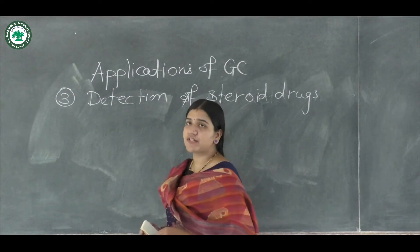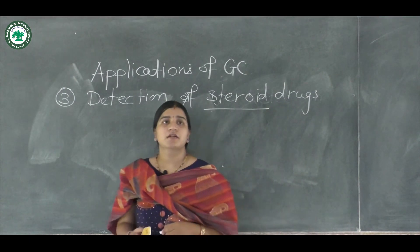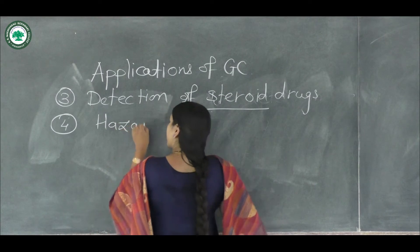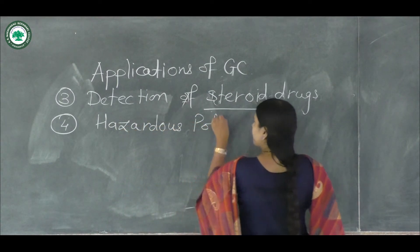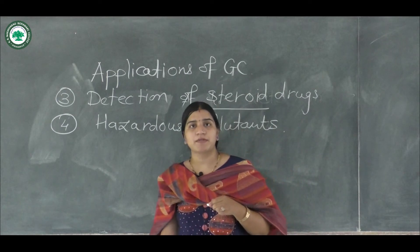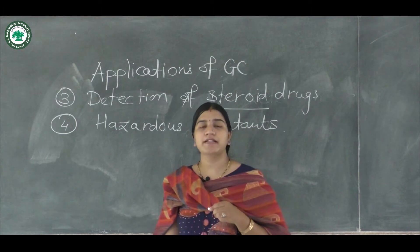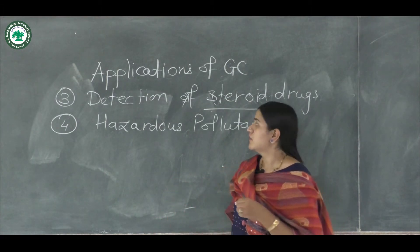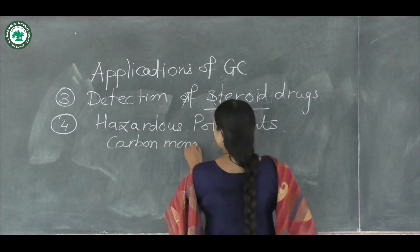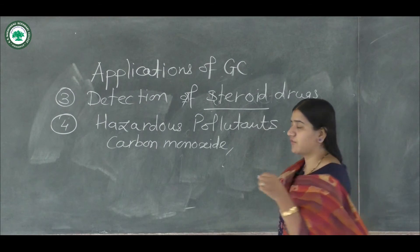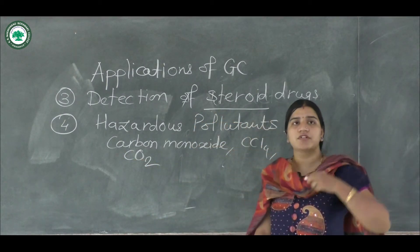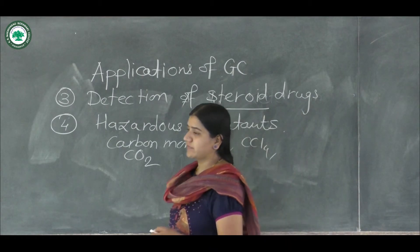All components present in steroids can be analyzed using gas chromatography. The next application is the analysis of hazardous pollutants. Gas chromatography has found a wide range of application in environmental chemistry to determine different types of pollutants present in air, such as carbon monoxide, tetrahydrofuran, carbon tetrachloride, and carbon dioxide.